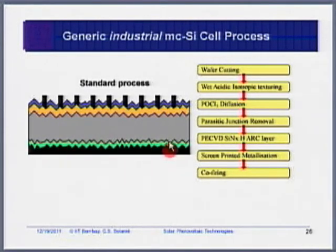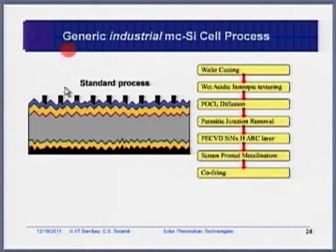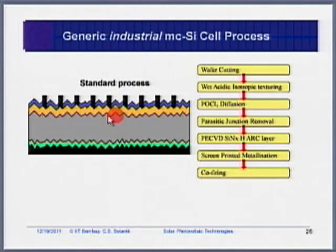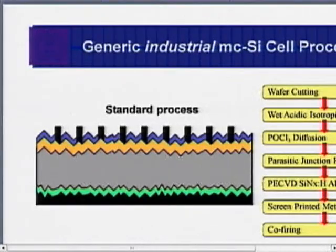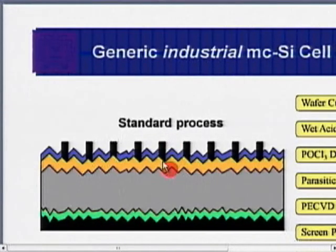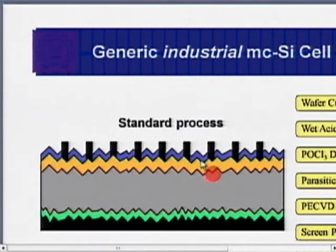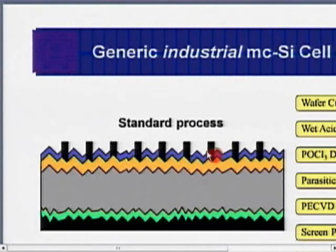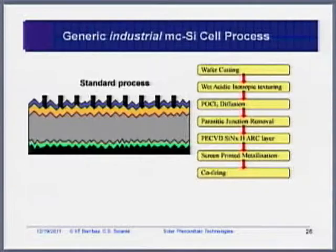After contact firing, what was the yellow N-plus layer at the back has become a P-plus (green) layer. The metal contacts now penetrate through the ARC and connect with the semiconductor. The final structure is: N-plus at the top, P in the middle, P-plus at the back — exactly what we want — plus the blue ARC layer and metal contacts at front and back.